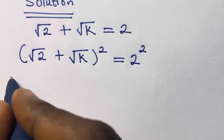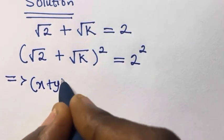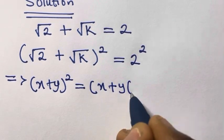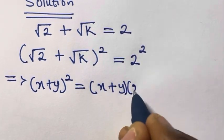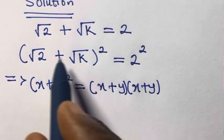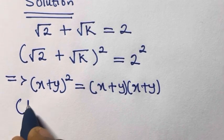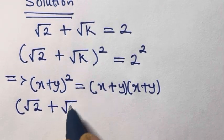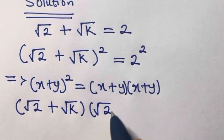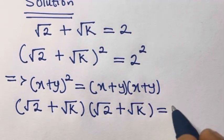Let's recall that if you have (x + y) squared, this equals (x + y) multiplied by (x + y). So that implies we have: square root of 2 plus square root of k, multiplied by square root of 2 plus square root of k, equals 2 squared, which gives us 4.